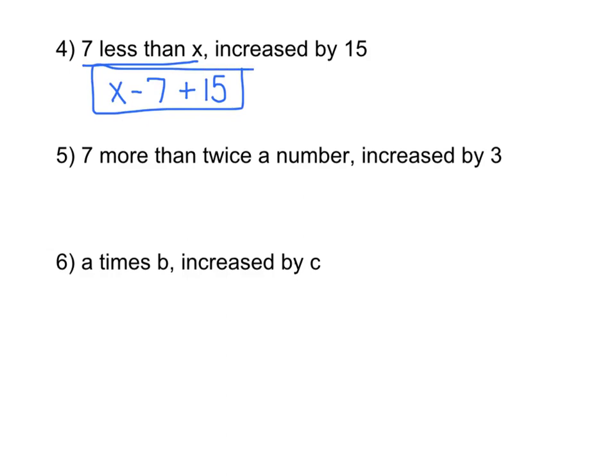Number five. Seven more than twice a number, increased by three. How would you write seven more than twice a number? Seven plus 2x, or you could write it as 2x plus seven. And then increased by three, you add three. Either one of these answers would be correct.